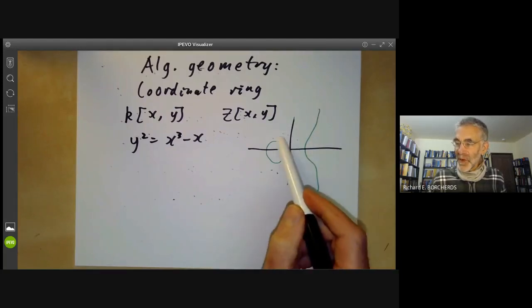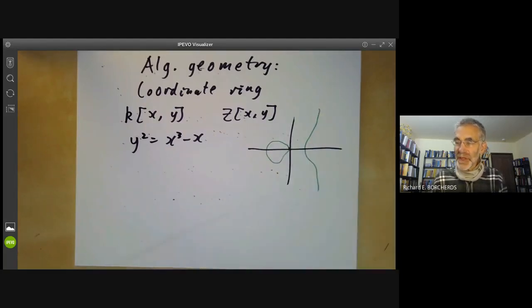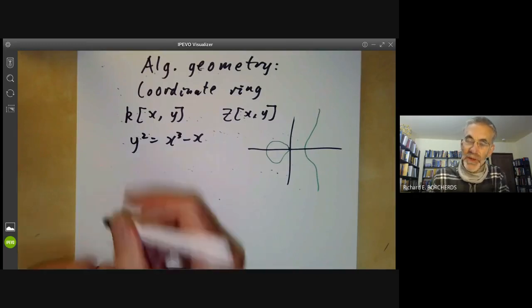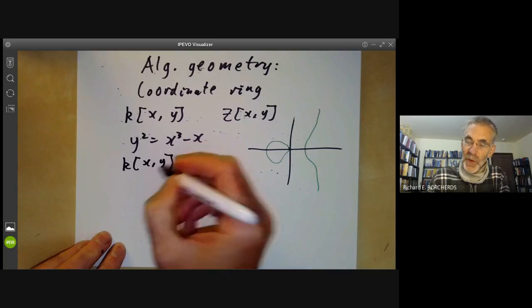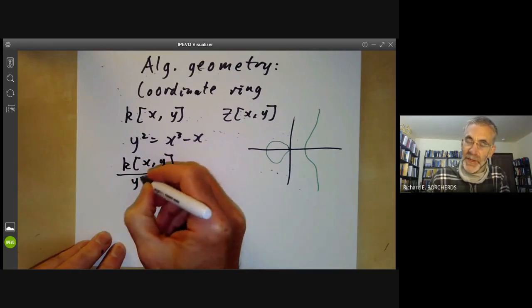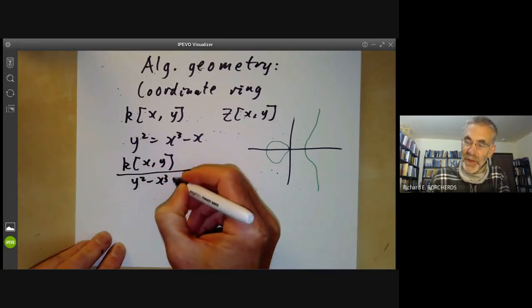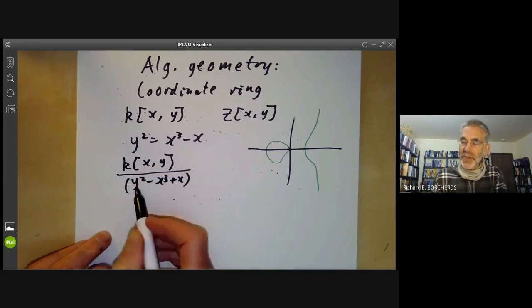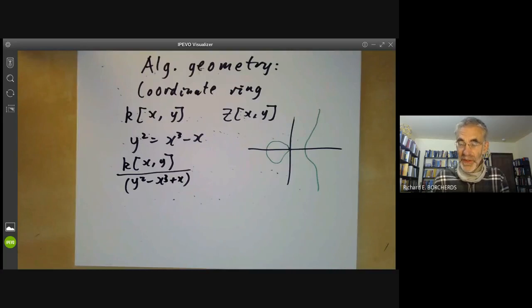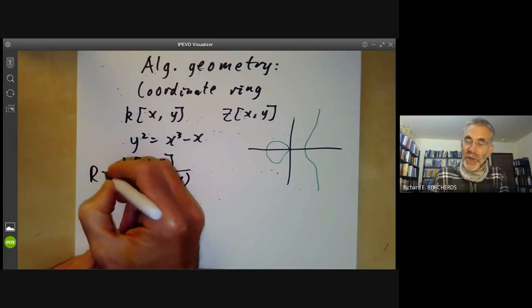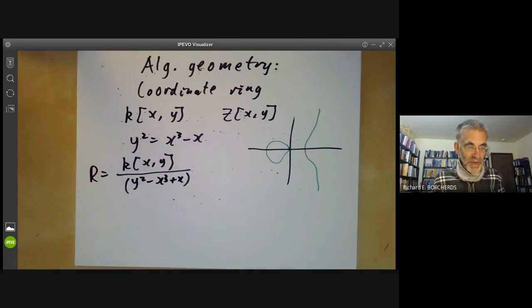Which means, roughly speaking, the functions on the elliptic curve that are equal to polynomials. This ring is just a quotient of the coordinate ring by the ideal generated by y²-x³+x. The ideal generated by some elements is normally indicated by putting it in parentheses. This would be a fairly typical example of a ring of interest to an algebraic geometer.